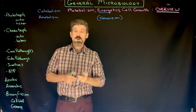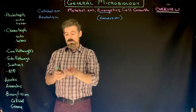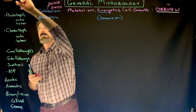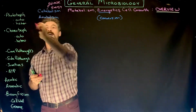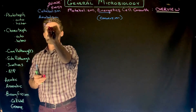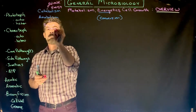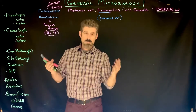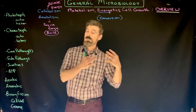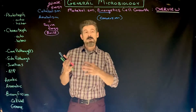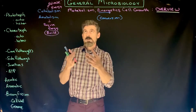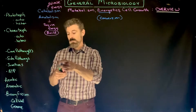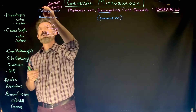In catabolism, we break molecules down in order to release energy. In anabolism, these processes require energy — we build structures and molecules that didn't exist in the cell before. So the idea is: how do organisms acquire energy, and how do they convert that into a usable form, which is primarily ATP.